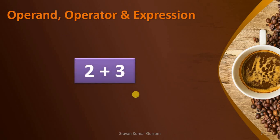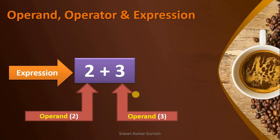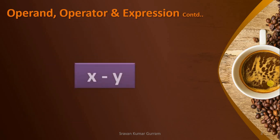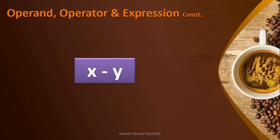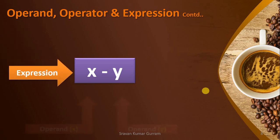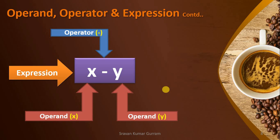For better understanding: 2 + 3 is an expression because it is a combination of operators and operands. Here, 2 and 3 are operands, and plus is the operator. Take one more example using variables: x - y is an expression. x is one operand, y is another operand, and minus is the operator. I think the terminology is now clear — what is operator, operand, and expression.